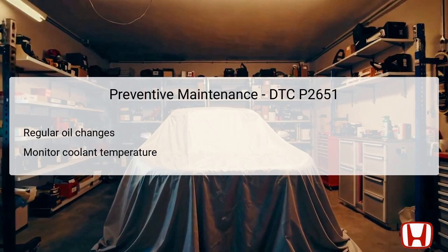Preventive maintenance plays a critical role in avoiding reoccurrence of DTC P2651 and related issues. One effective preventive measure is ensuring regular oil changes, as fresh oil maintains proper viscosity and flow through the rocker arm oil control and pressure systems. This practice helps prevent clogging in oil passages that could lead to a lack of pressure and trigger future fault codes. Additionally, consistently monitoring the engine coolant temperature is vital because excessive heat may cause oil degradation, which can adversely affect the hydraulic system controlling the rocker arms. Performing periodic inspections of the rocker arm oil components and VCM system allows technicians to identify any problems early, decreasing the likelihood of system failures.